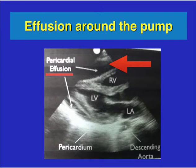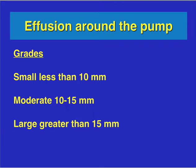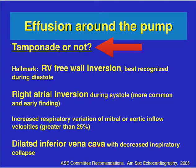Please refer to the pleural effusion lecture for more visual images. In short, if you have right ventricular collapse and/or hypotension with an acute fluid collection, you may decide to go ahead and perform pericardial effusion drainage. There are grades of pericardial effusions, but remember we're not so much worried about the amount or grade — we're more concerned about whether it is causing tamponade. Watch the videos discussing right ventricular collapse or right atrial inversion.